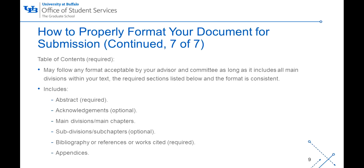Your document must include a table of contents. It may follow any format acceptable by your advisor and committee, as long as it includes all main divisions within your text, the format is consistent, and these required sections are included: the abstract, main divisions or main chapters, and the bibliography, references, or works cited section. You may also list acknowledgements, dedication, subdivisions or subchapters, and appendices, but these are not required to be included.